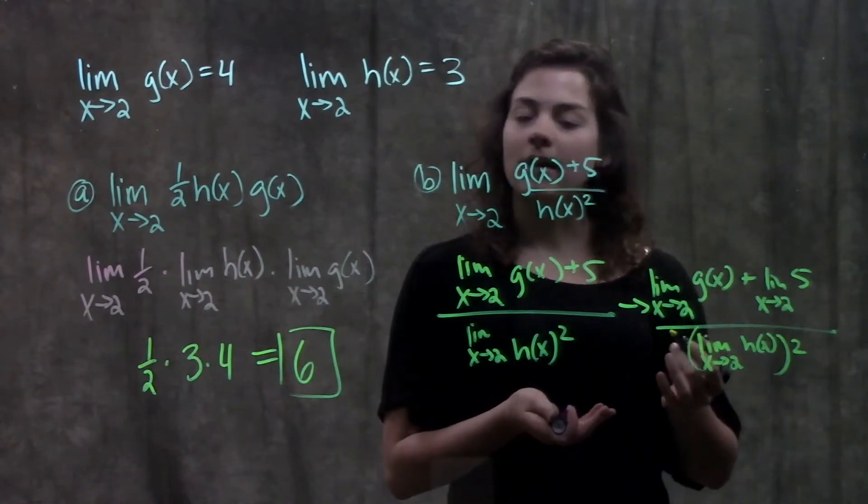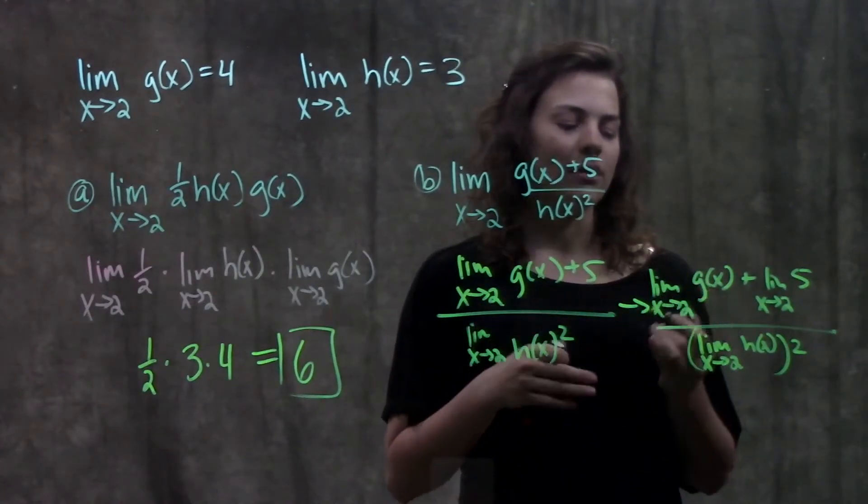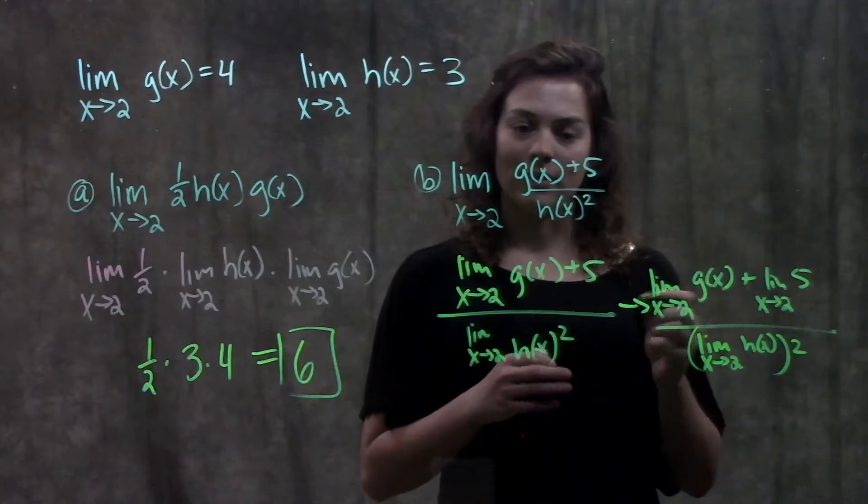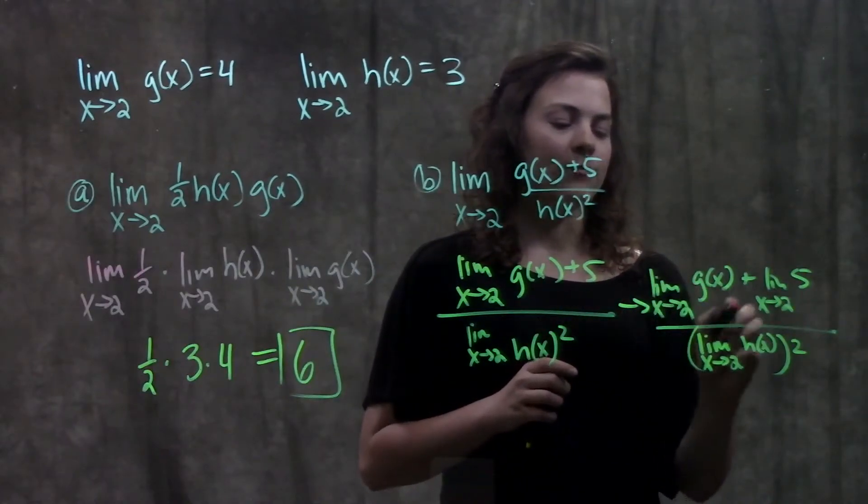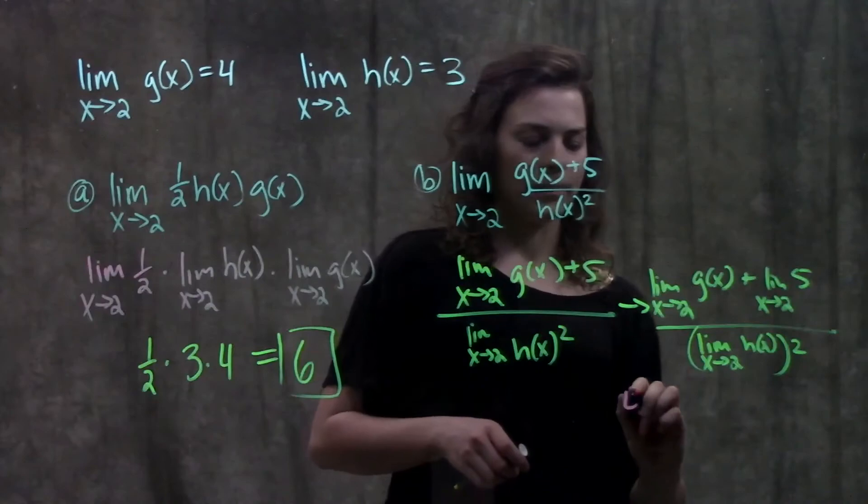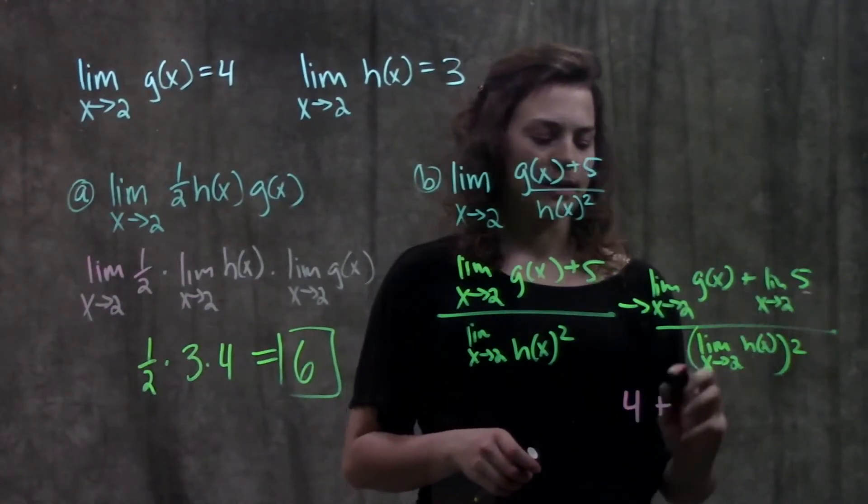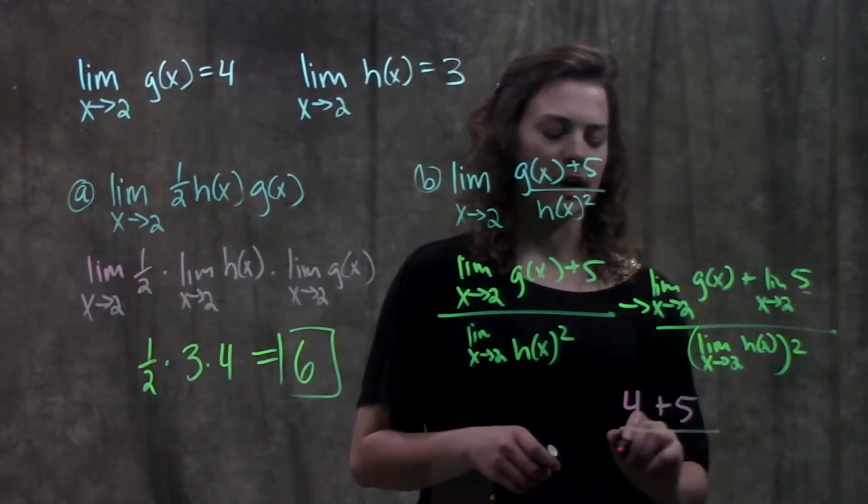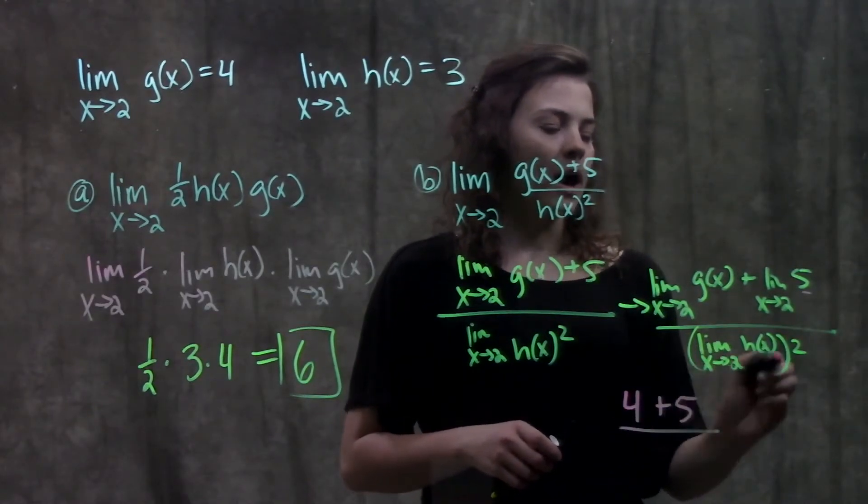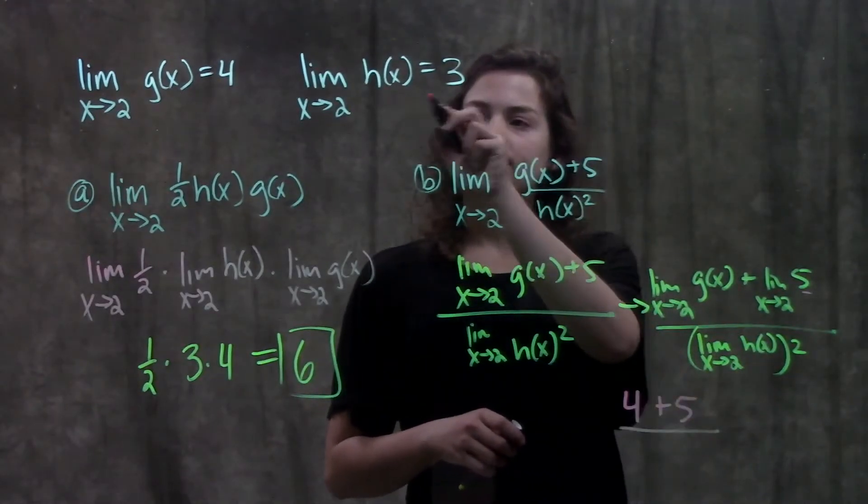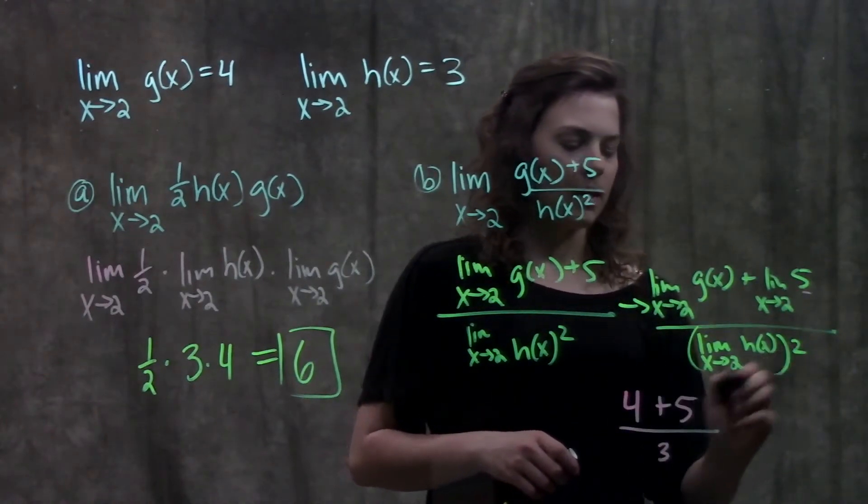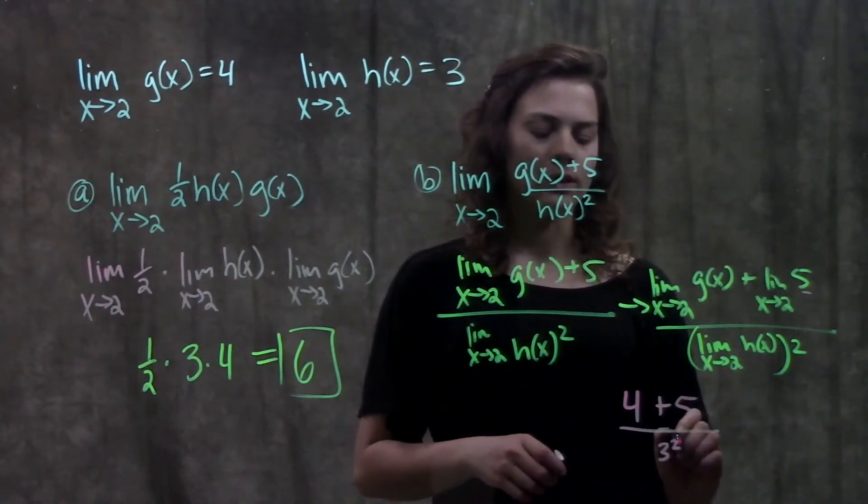And from here, this is about as far as I can simplify it out. So now I can just plug in all of my values. So here I have a value for the limit of g of x. They tell me is 4. Plus, remember the limit of any constant is just always that constant. So I get 4 plus 5 on the top over the value they give me for h of x is 3. Remember there's still a square here. So I have 3 squared on the bottom.